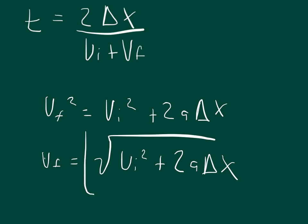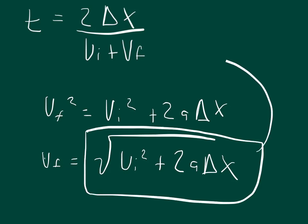Now, all we have to do at this point is take this and substitute it, because this equals the final velocity, we can substitute it right in there for the final velocity, and we don't even need to know the final velocity anymore.